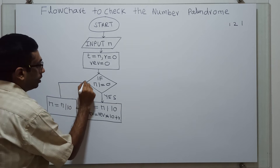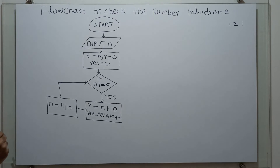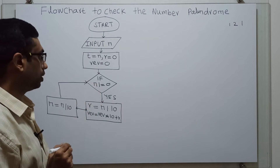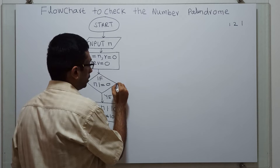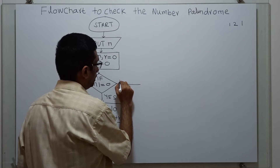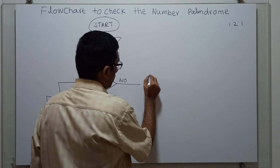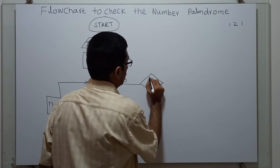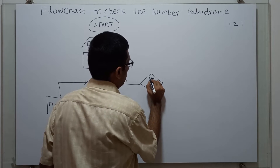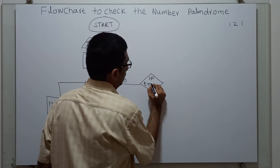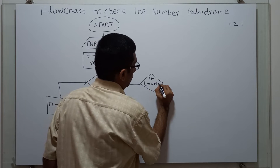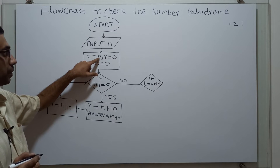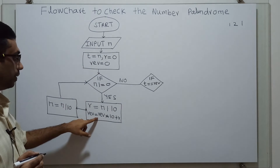I am connecting the flow back to the decision symbol — N not equal to 0. If N not equal to 0 is false, meaning N equals 0, then on the false side (no side), I have another decision symbol that checks if T is equal to reverse. T is the original value of N, and reverse is the computed reverse formula.